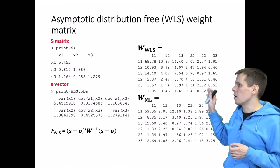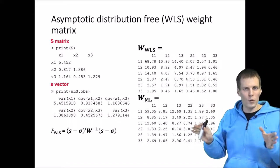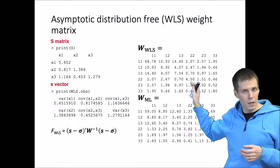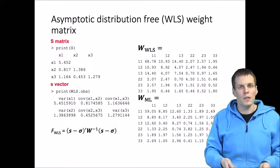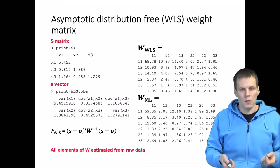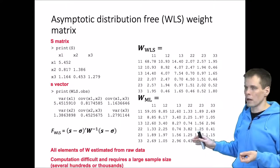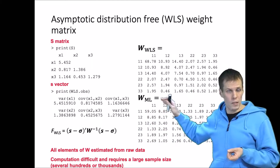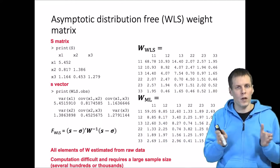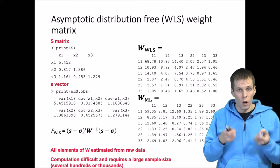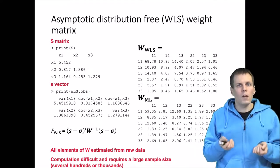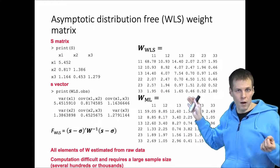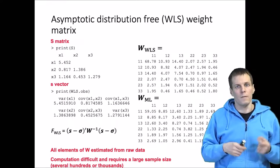However, while it seems appealing to drop the normality assumption and estimate all elements from the data instead of assuming a normal distribution, this comes with two big issues. Issue number one is computational difficulty: the weight matrix tends to be very large and needs to be inverted during estimation, which is difficult for computers. Calculating WLS estimations for a large model takes a long time and may not even converge. Additionally, estimating this weight matrix in a stable way requires a very large sample size because kurtosis is difficult to estimate and varies a lot across samples.